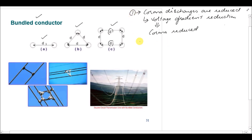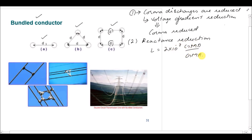The second advantage is a reduction in the reactance of the line. From the formula of inductance, L = 2 × 10⁻⁷ × ln(GMD/GMR), where GMD is the geometric mean distance between conductors of different phases, and GMR is the geometric mean radius — the distance between conductors of the same phase. These two conductors are of the same phase; these three conductors are of the same phase — this is a double circuit transmission line with three phases.